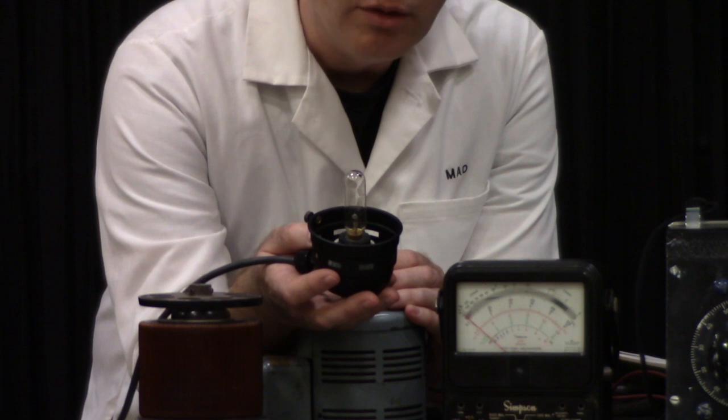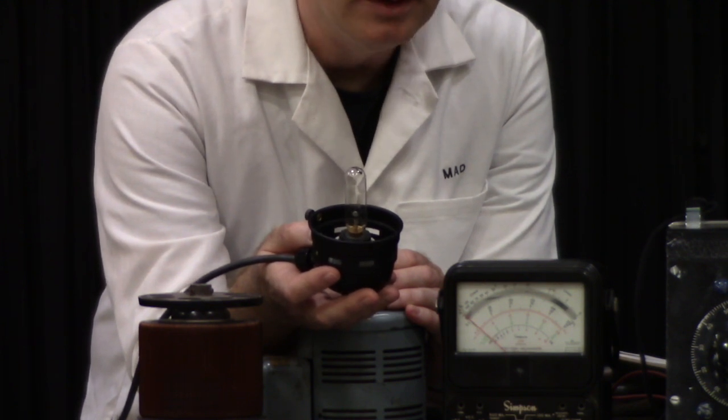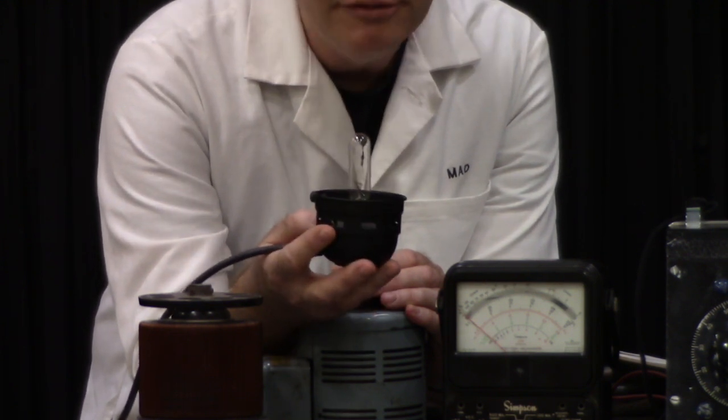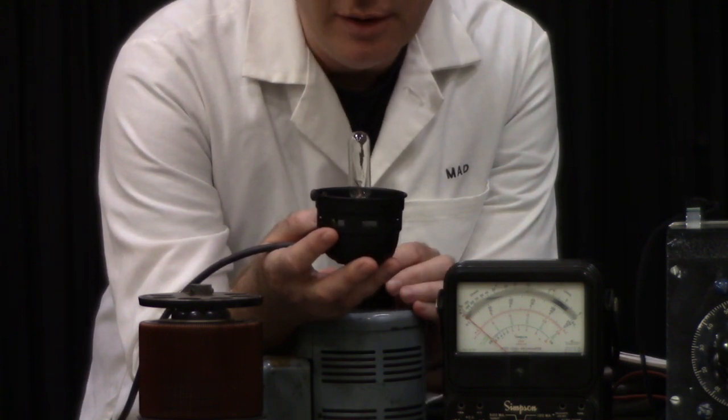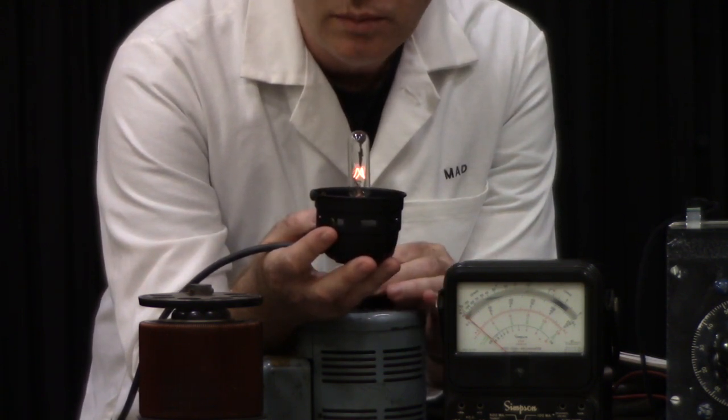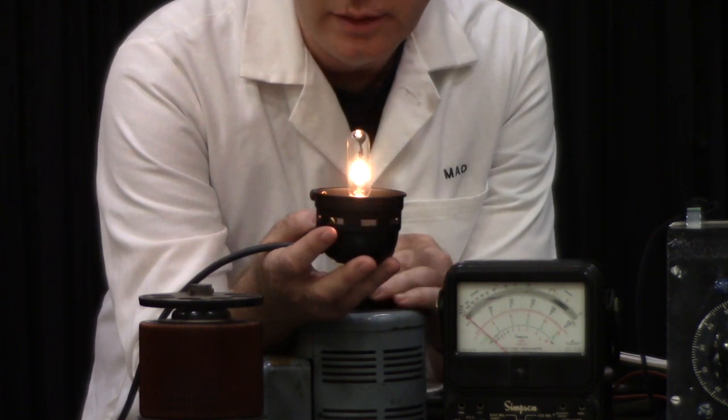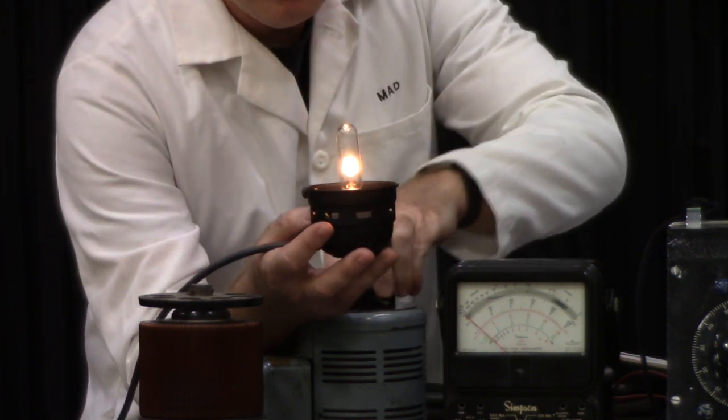Also, an auto transformer does not have a minimum load like a resistance dimmer. This is a 15 watt lamp and you can see that it is able to dim it all the way down to zero. And then, bring it up. Light goes on, light goes off.